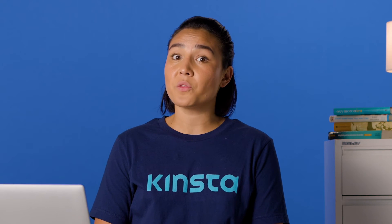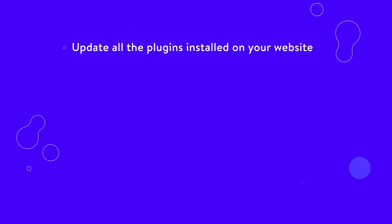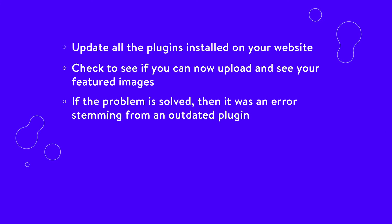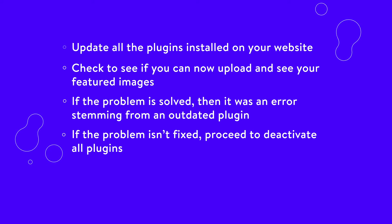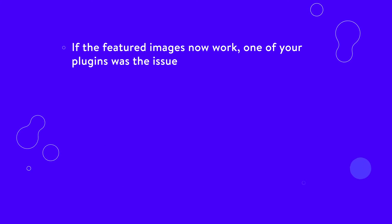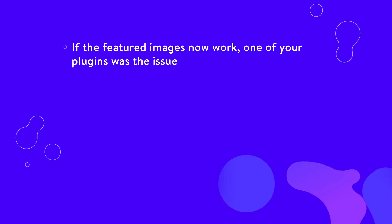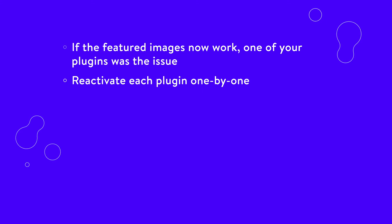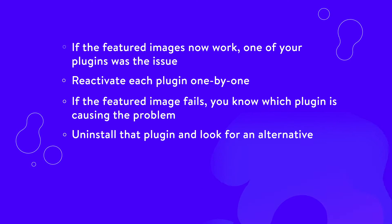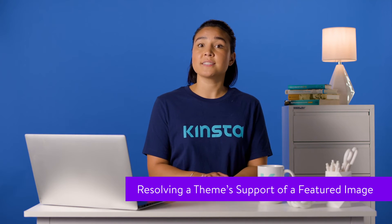The best course of action for plugin conflicts is: one, update all the plugins installed on your website; two, check to see if you can now upload and see your featured images; three, if the problem is solved, it was an error from an outdated plugin; four, if not fixed, deactivate all plugins; five, check if featured images show up after all plugins are deactivated; six, if they now work, one of your plugins was the issue; seven, reactivate each plugin one by one, checking after each; eight, if the featured image fails, you know which plugin is causing the problem; nine, uninstall that plugin and look for an alternative.